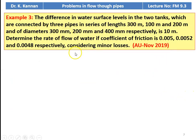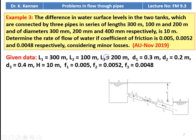Example number 3 from the November 2019 question paper: the difference in water surface levels in two tanks connected by three pipes in series of lengths 300 m, 100 m, and 200 m, and diameters 300 mm, 200 mm, and 400 mm respectively, is 10 meters. Determine the rate of flow if the coefficient of friction is 0.005, 0.0052, and 0.0048 respectively, considering minor losses. The compound pipe arrangement connects tanks A and B.